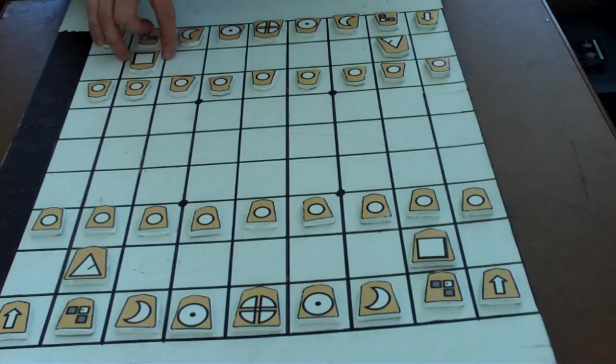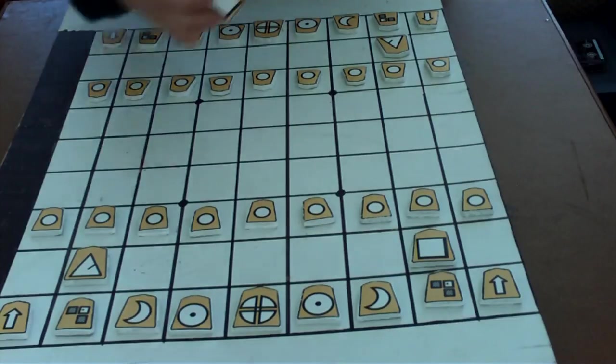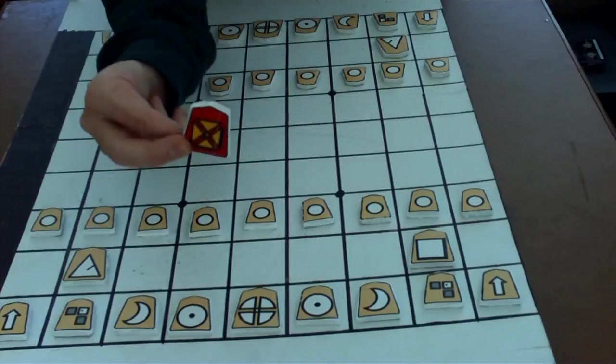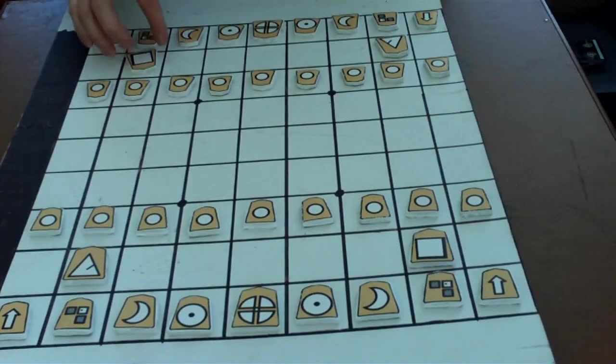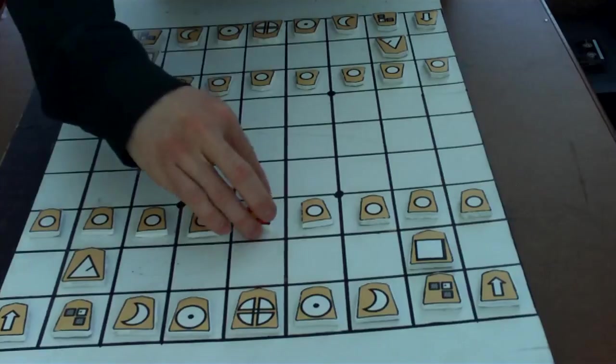Now the shogi pieces are double-sided. And here's a rook, normal side, flip it over, and that's its promoted side. So when you promote a piece on shogi, all you have to do is flip it over. I'll show you some examples here.